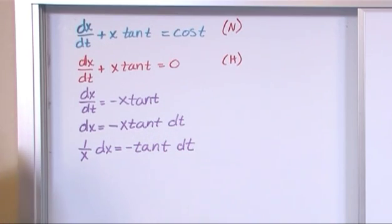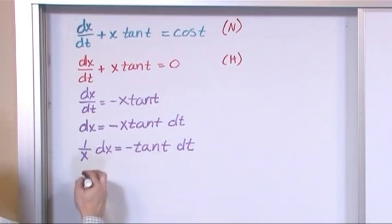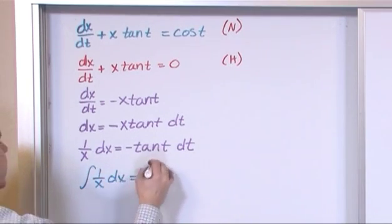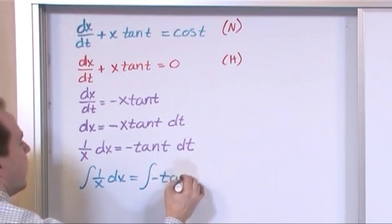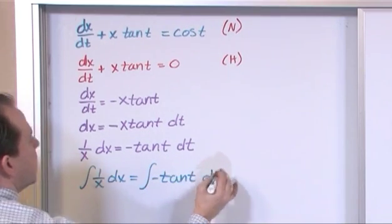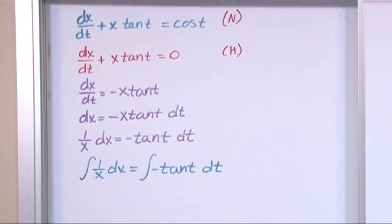So, we've made good progress in our separation of variables. Let's integrate both sides. So we'll have integral of 1 over x dx is equal to integral of negative tangent t dt. So we're going to integrate both sides of that equation.